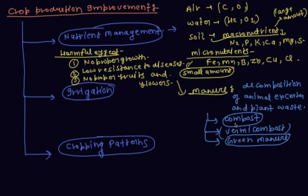Compost is made from animal excreta like cow dung, kitchen waste, and plant remains, which are left in a pit for a long time and decompose slowly to form compost. For vermicompost, to make the decomposition process fast, earthworms are left in the pit. Earthworms eat up the waste and excrete organic matter, so this is called vermicomposting.